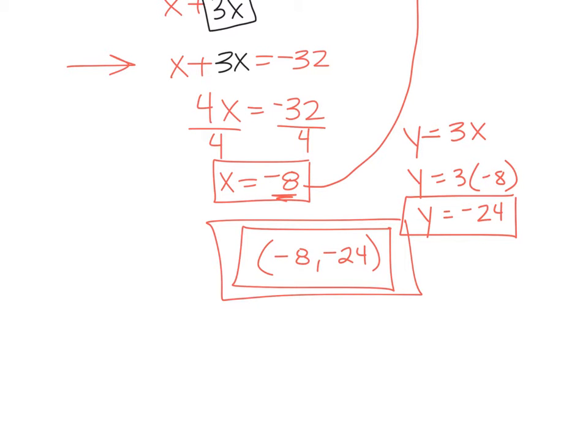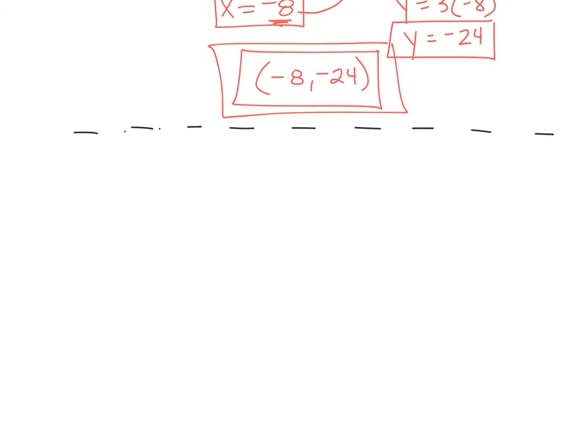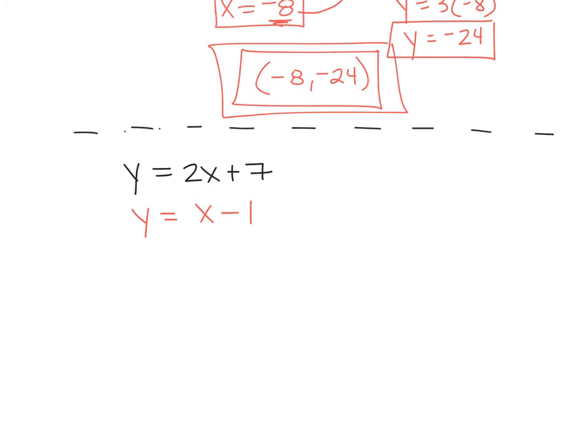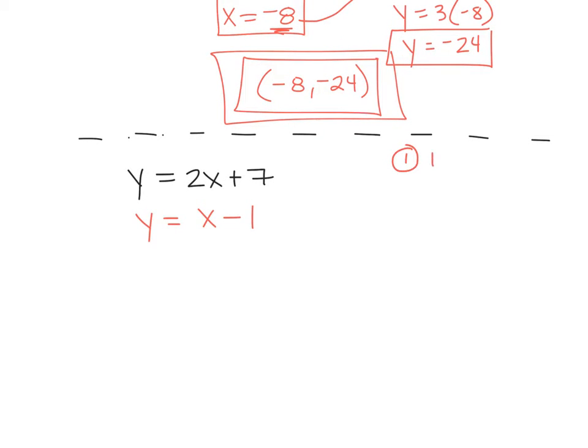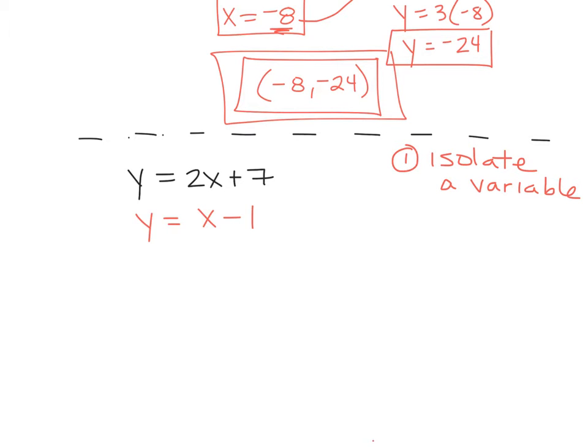What would we do for this one? Reset your brain. Pay attention on this one. If I have Y equals 2X plus 7 and Y equals X minus 1. Here's your steps. First step, isolate a variable. So look at this problem. Is there a variable that is isolated? Where? Y on both of them. This one has two variables that are isolated.